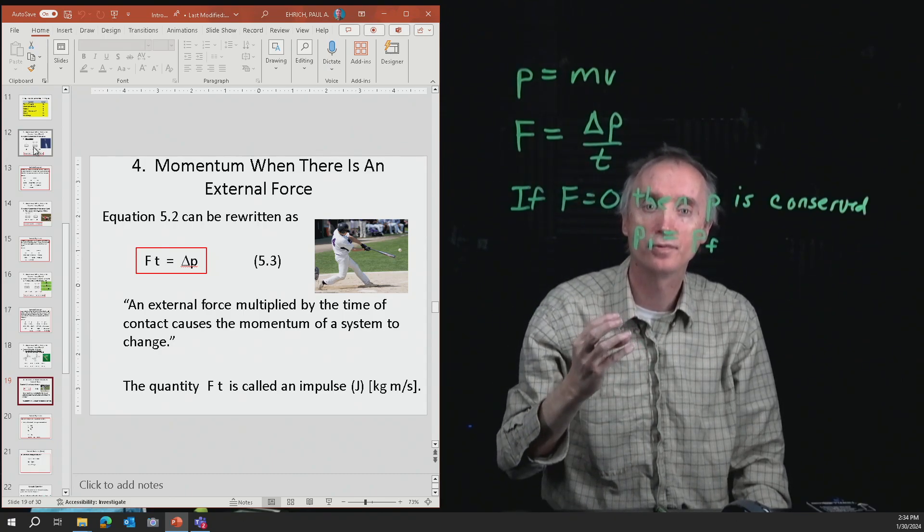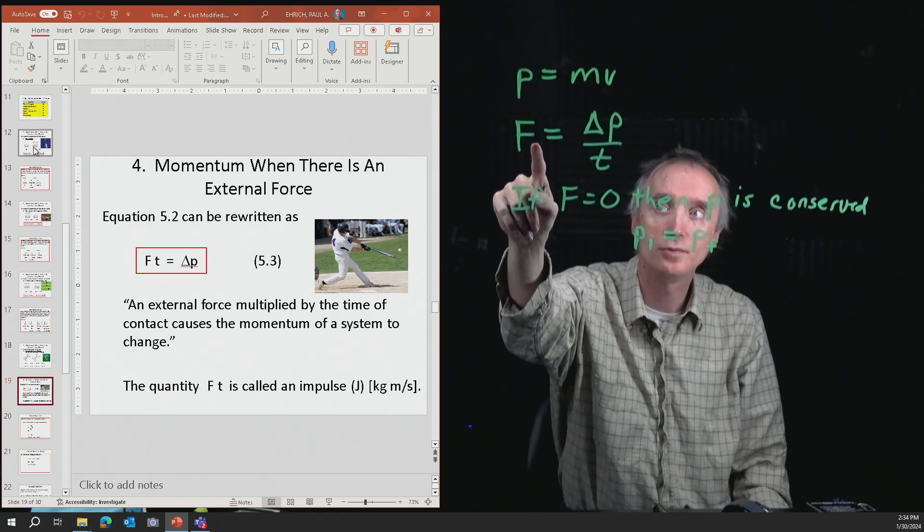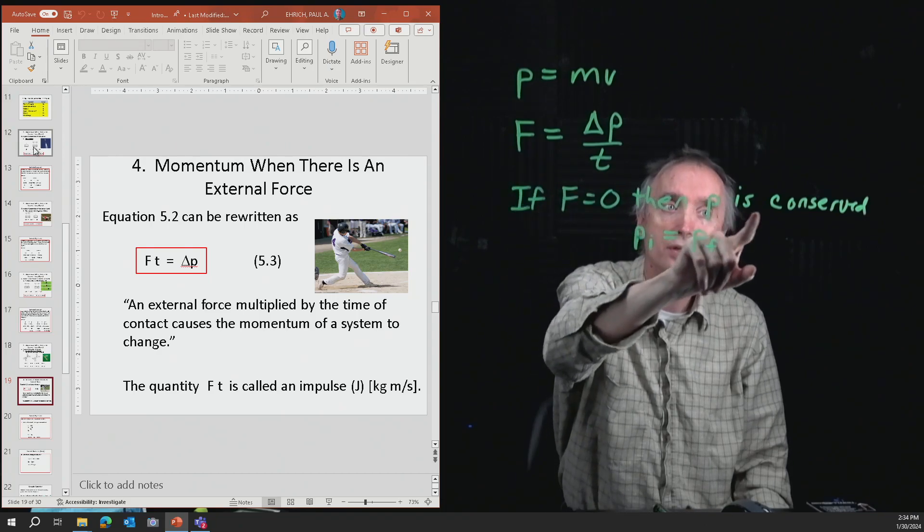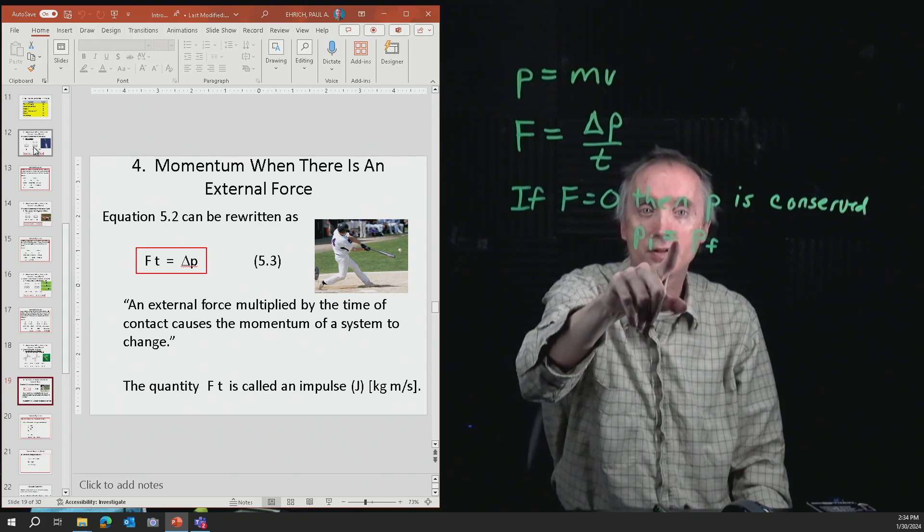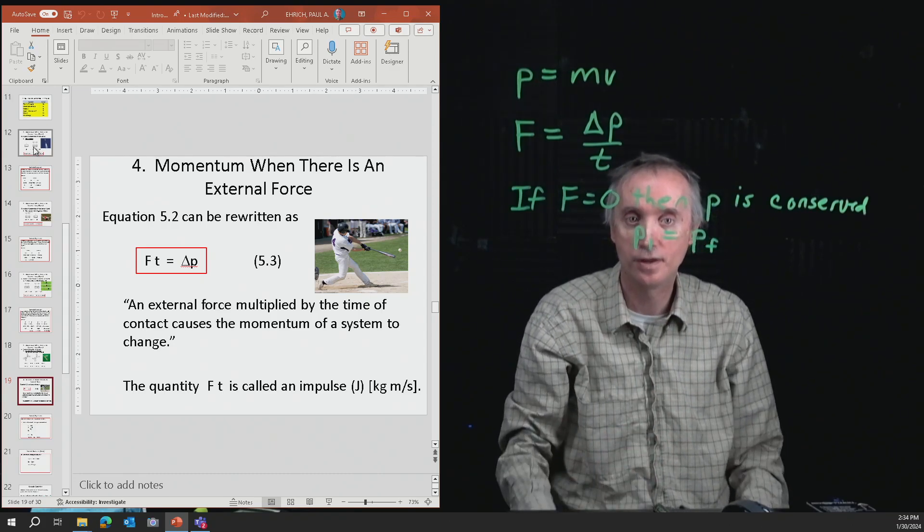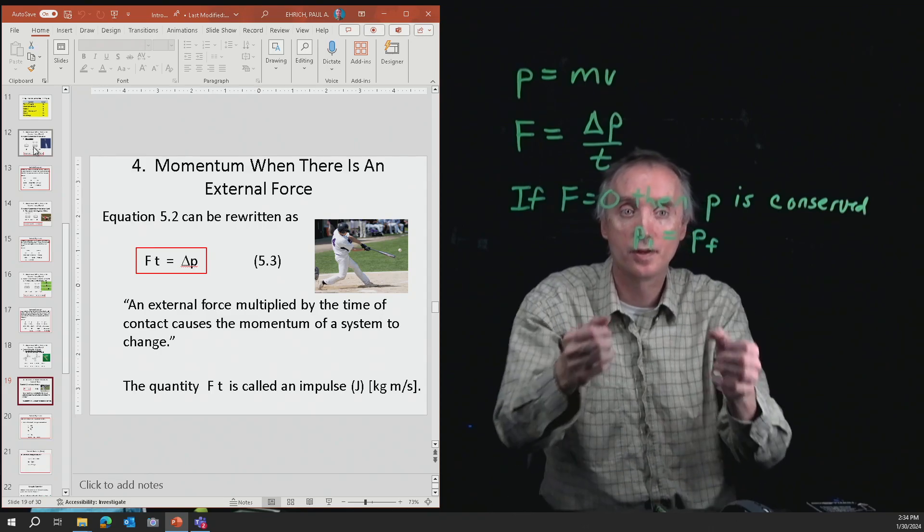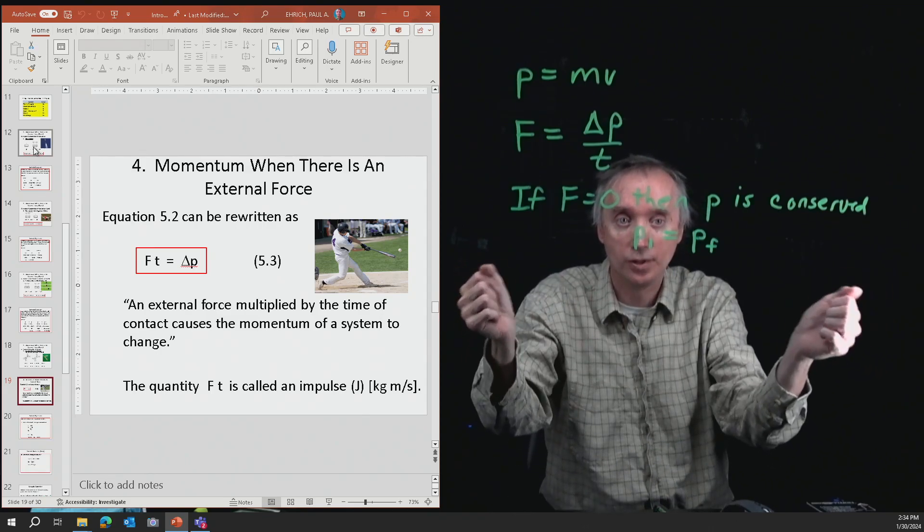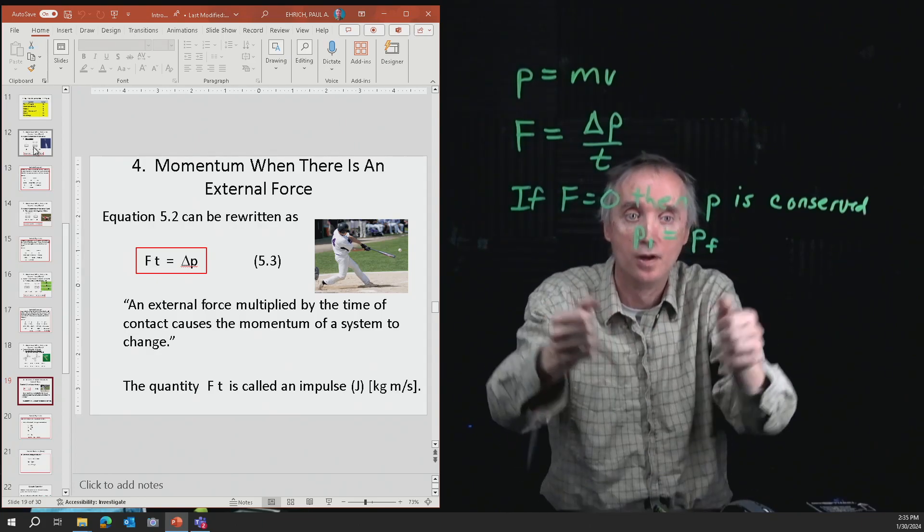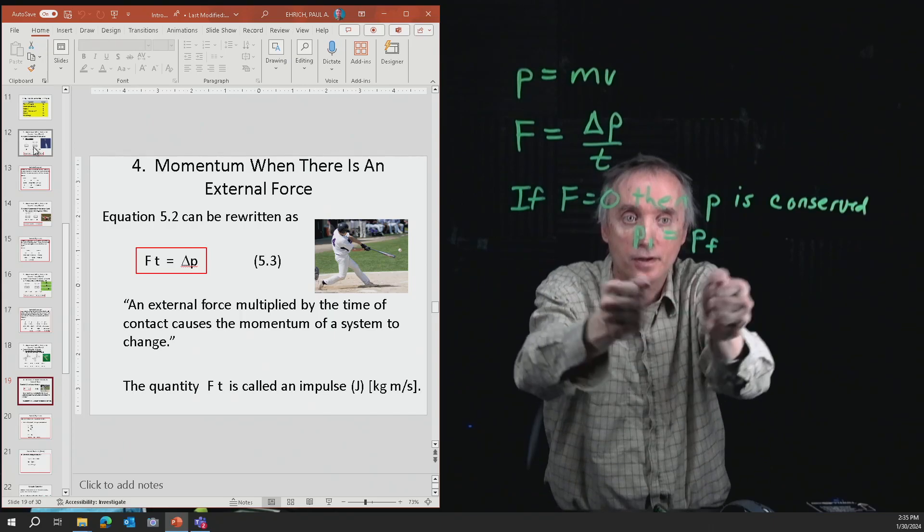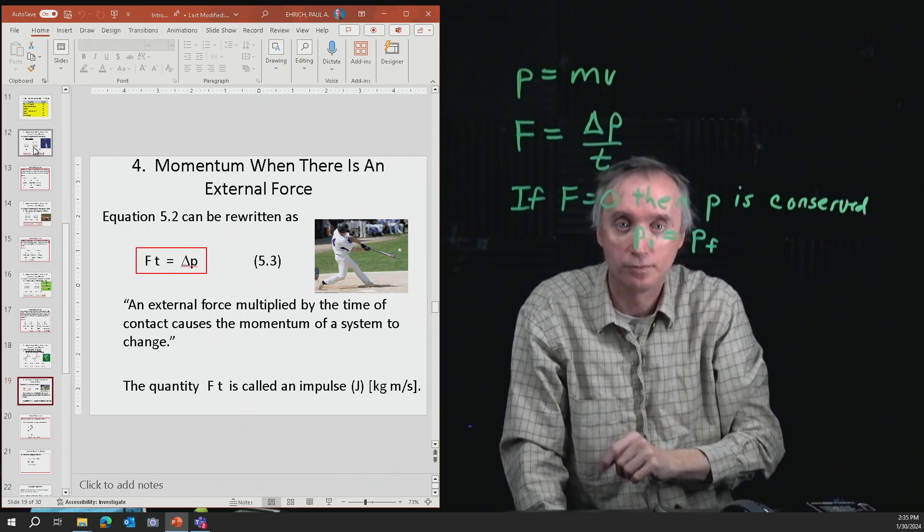If there is no force, so F equals zero, then momentum is conserved. Whatever your initial momentum is, that's going to equal your final momentum. We did that for three examples: where something blew apart, where something comes together and sticks, and where something comes together and bounces off. All three of those were conservation of momentum problems.